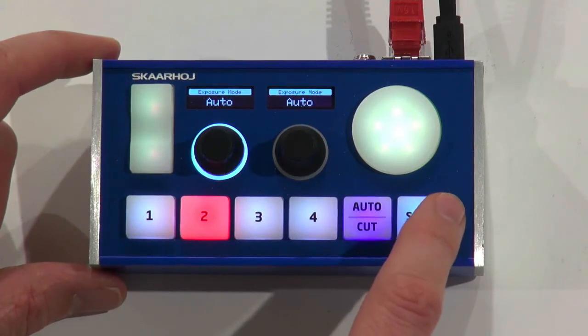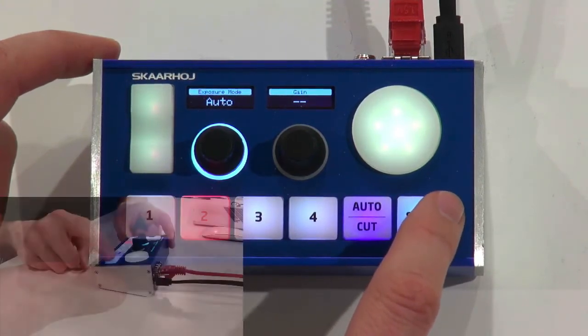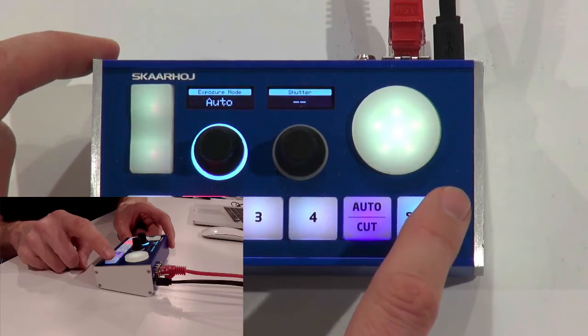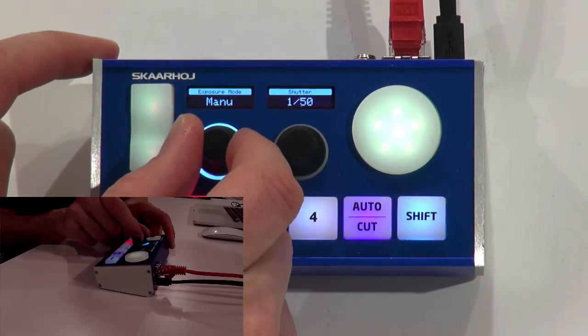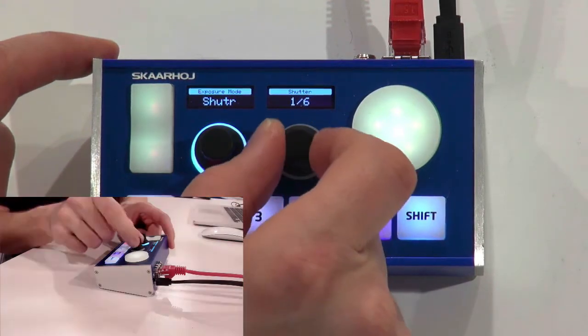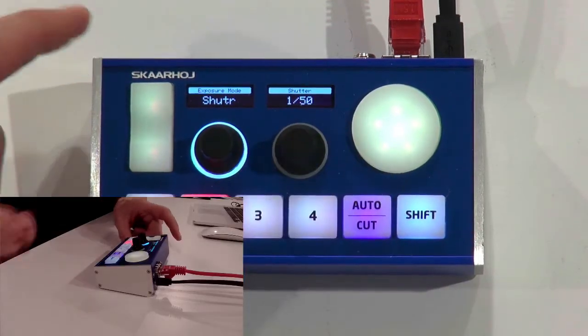But if I press here, as you can see, I'm cycling through various options. So for instance, if I go to shutter speed, right there, that would be available to me if I go to the shutter speed in the manual exposure mode, and I can now adjust shutter speed off the camera.